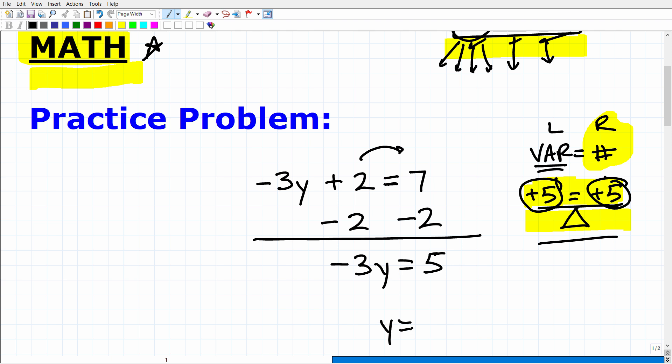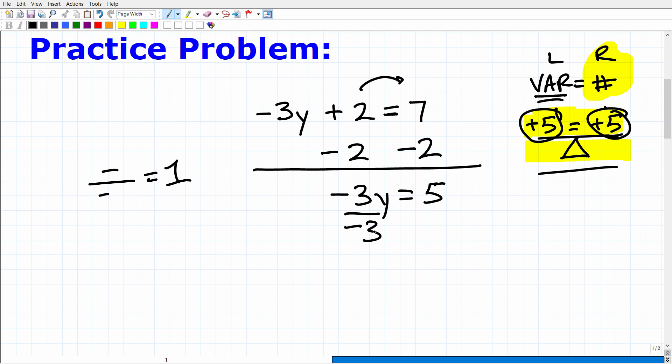Remember, our objective is to get y by itself. So how can I get y by itself? Well, I can divide both sides of the equation. If I divide this negative three by negative three, negative divided by negative, and any number divided by itself is going to be a positive one. Negative three divided by negative three is a positive one y. One y is the same thing as y. So this is our solution right here. This is just going to be y. But remember, whatever I do to the left-hand side, I got to do the exact same thing to the right-hand side. So that's going to be five divided by negative three. So y is going to be equal to five divided by negative three. And that is the solution.